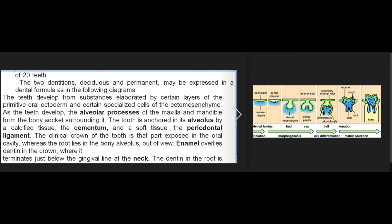The teeth develop from substances elaborated by certain layers of the primitive oral ectoderm and certain specialized cells of the ectomesenchyme. As the teeth develop, the alveolar processes of the maxilla and mandible form the bony socket surrounding them. The tooth is anchored in its alveolus by a calcified tissue, the cementum, and a soft tissue, the periodontal ligament. The clinical crown of the tooth is that part exposed in the oral cavity, whereas the root lies in the bony alveolus.